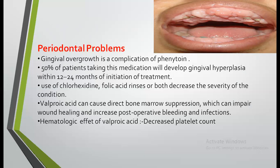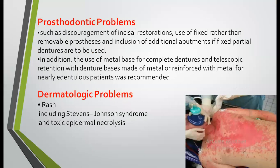Valproic acid can cause direct bone marrow suppression, which can impair wound healing and increase post-operative bleeding and infections. The hematological effect of valproic acid is decreased platelet count. Prosthodontic problems include discouragement of incisor restorations and use of fixed rather than removable prostheses. Inclusion of additional abutments if fixed partial dentures are to be used.